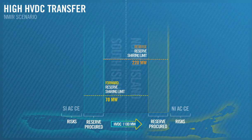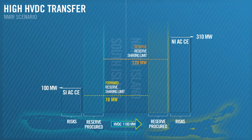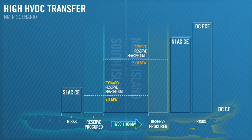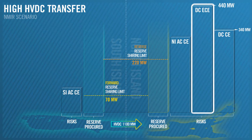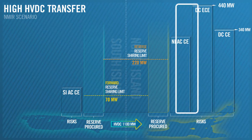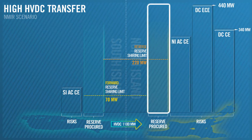Our AC risks are similar to previous scenarios, at 310 megawatts for the North Island and 100 megawatts for the South Island. But due to the high energy transfer across the HVDC, our DC risks become 440 megawatts for the DCECE and 340 megawatts for the DCCE. The DC risk must be covered by the reserve procured from the receiving island, in this case the North Island.